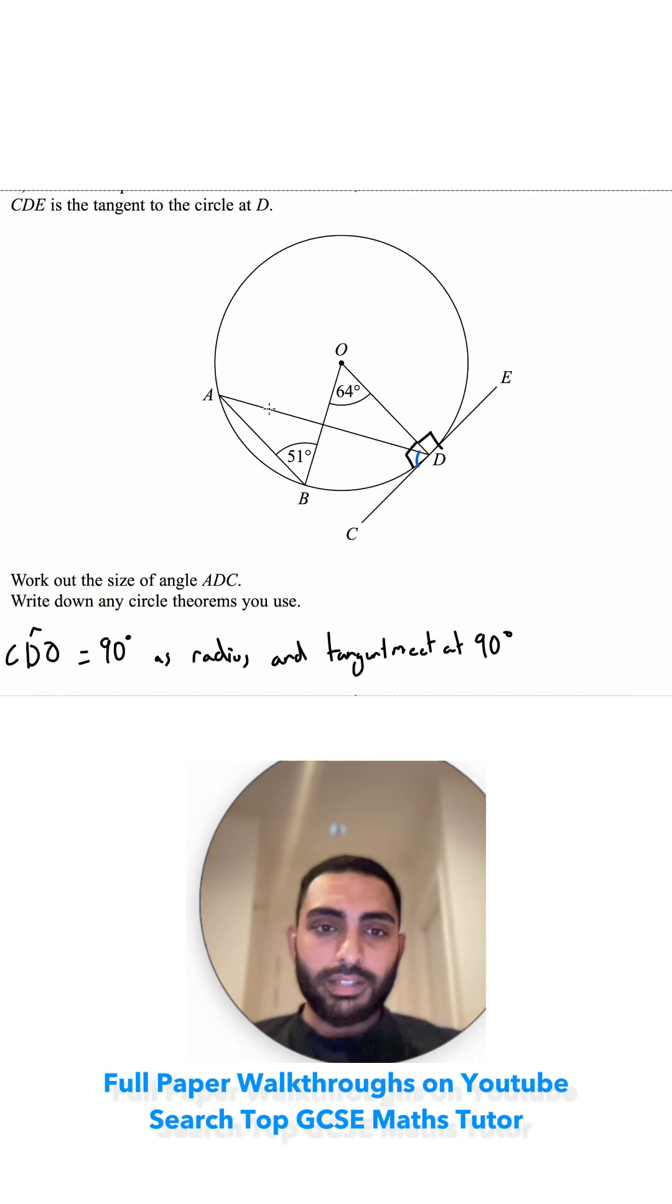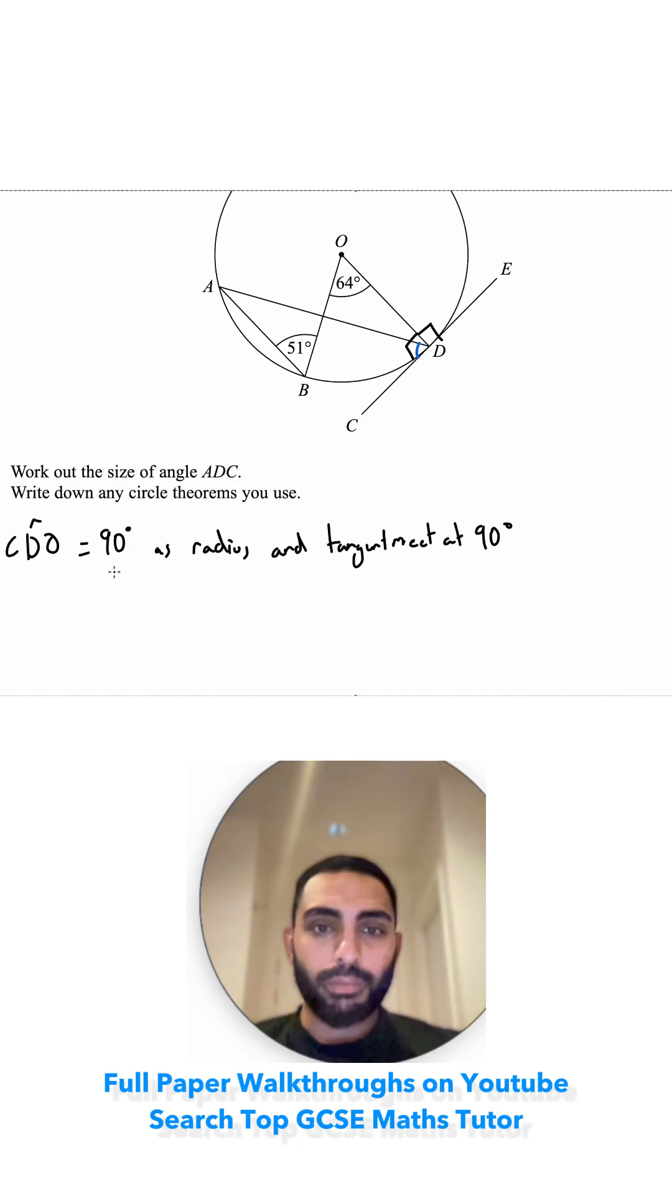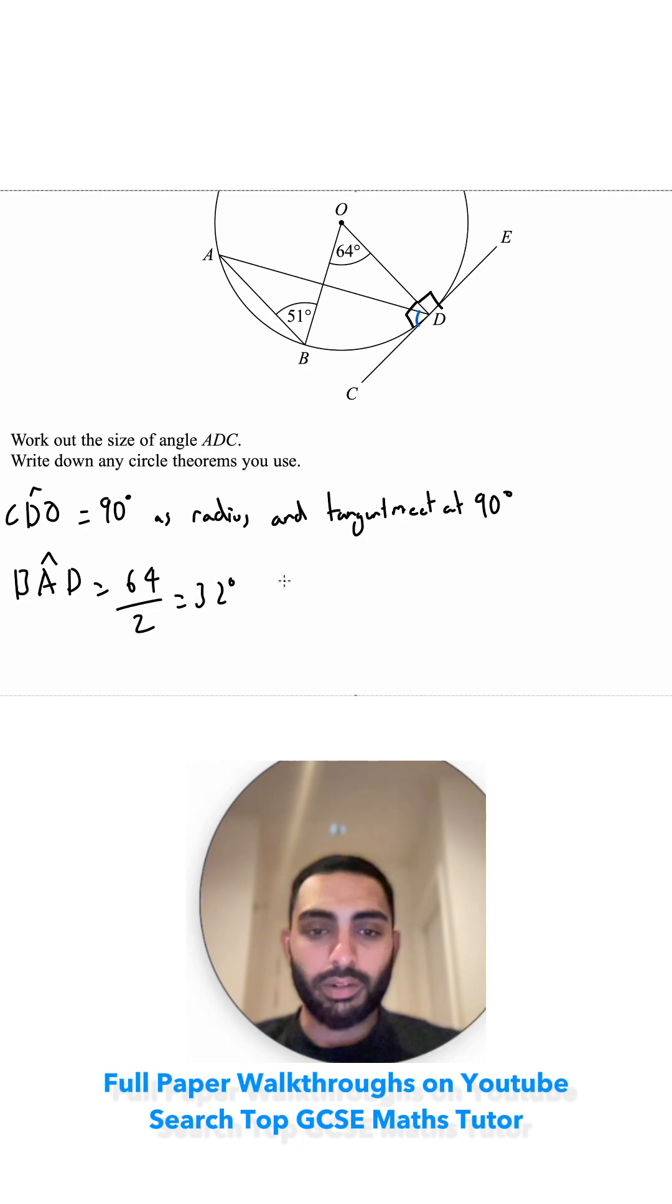Now I can see I've got an angle at the centre and I've got an angle at the circumference. So the angle at the centre is twice the angle at the circumference. So 64 divided by 2. We're trying to work out BAD, which is equal to this 64 divided by 2, which is 32. And the reason for that is the angle at the centre is twice the angle at the circumference.